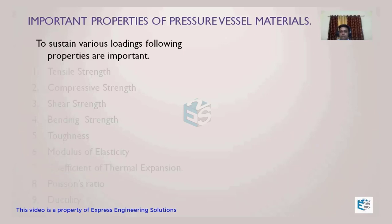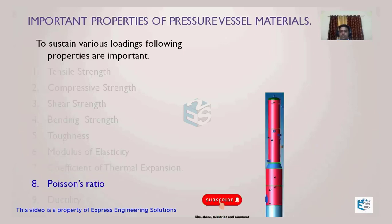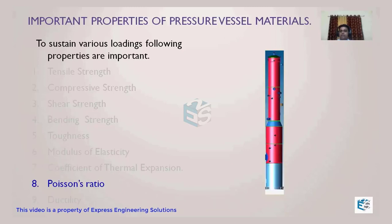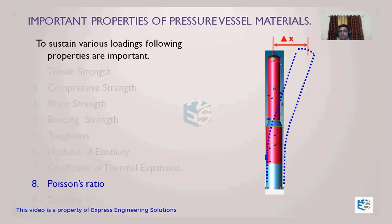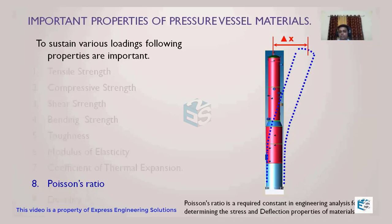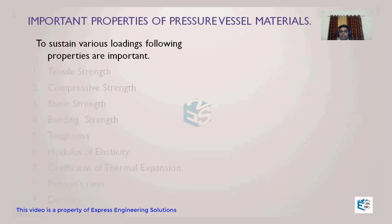The next property is Poisson's ratio, which is another important virtue of the material required to calculate deformations and stresses. Poisson's ratio is the ratio of lateral strain to longitudinal strain. It is required as a constant in engineering analysis for determining the stress and deformation properties of the material. So Poisson's ratio is the next important property a material should possess.